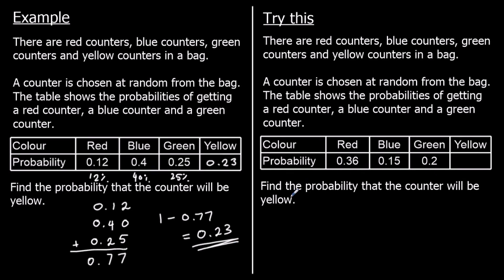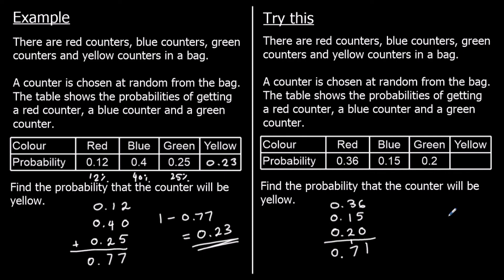And one for you to try. Same setup — red, blue, green, and yellow counters. We need the missing probability. The known probabilities are 0.36, 0.15, and 0.2, which is 36%, 15%, and 20%. Adding them: 0.36 + 0.15 + 0.20 = 0.71, or 71%. One minus 0.71 is 0.29, so the missing probability is 0.29.